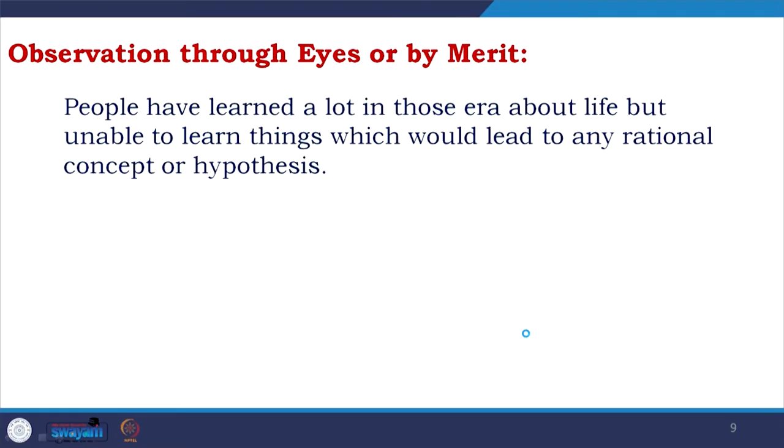Observation through eyes or by merit — people learned a lot in this era about life, but they were unable to learn things that would lead to any rational concept or hypothesis. What I am saying is about recorded history. If you look at recorded history, the first proof of a creative mind comes from Greek civilization. Rapid progress started to be made with the advent of Greek civilization.